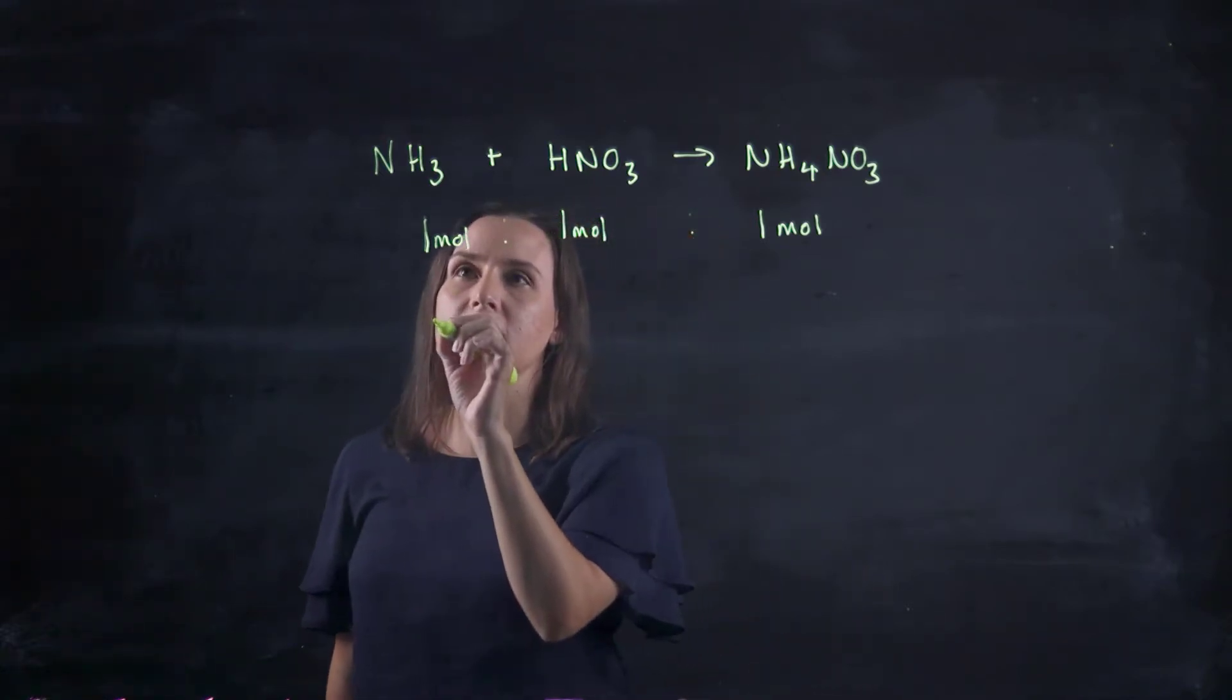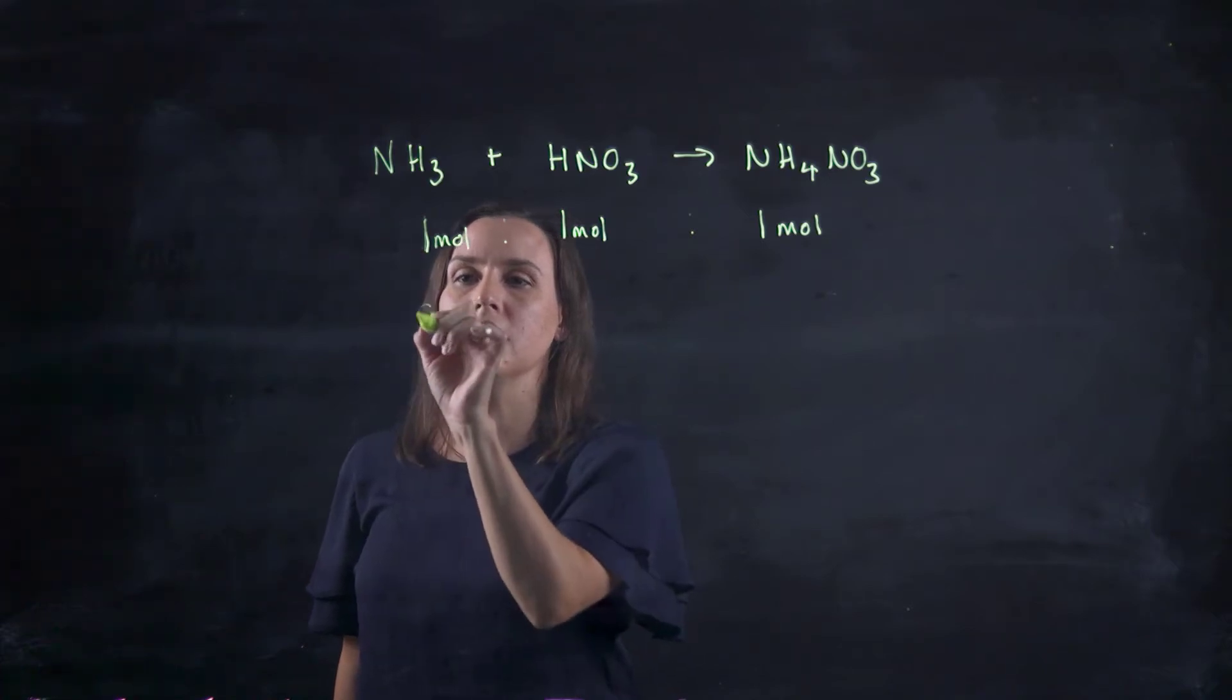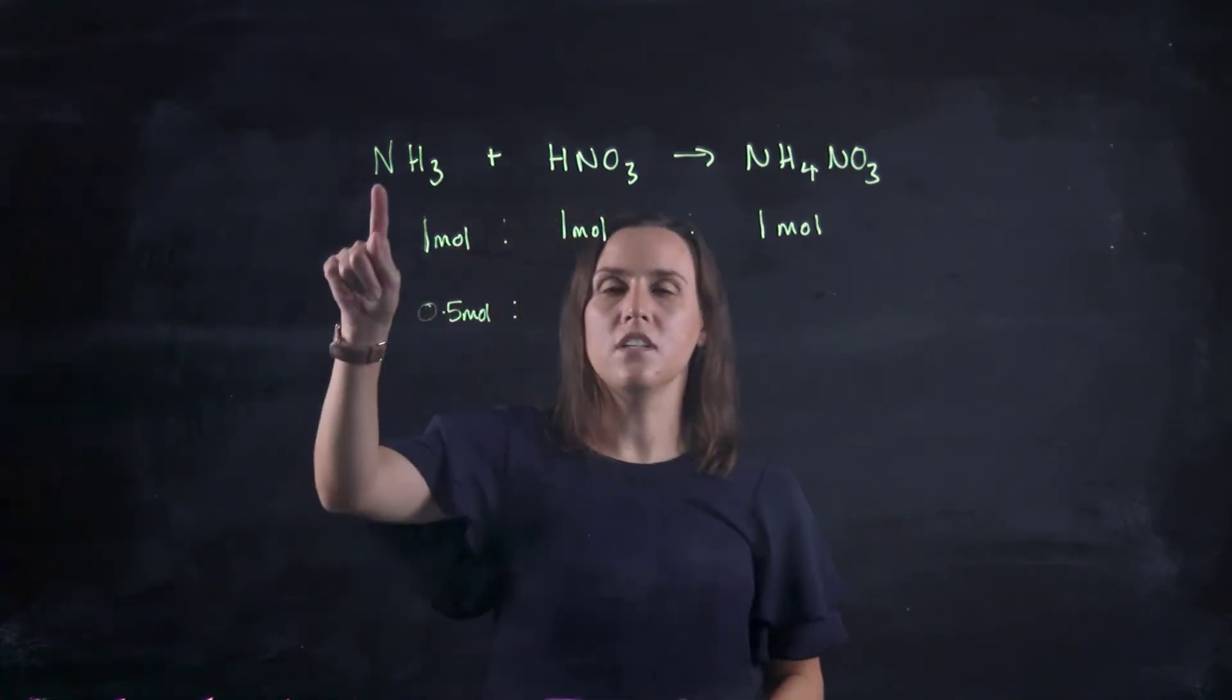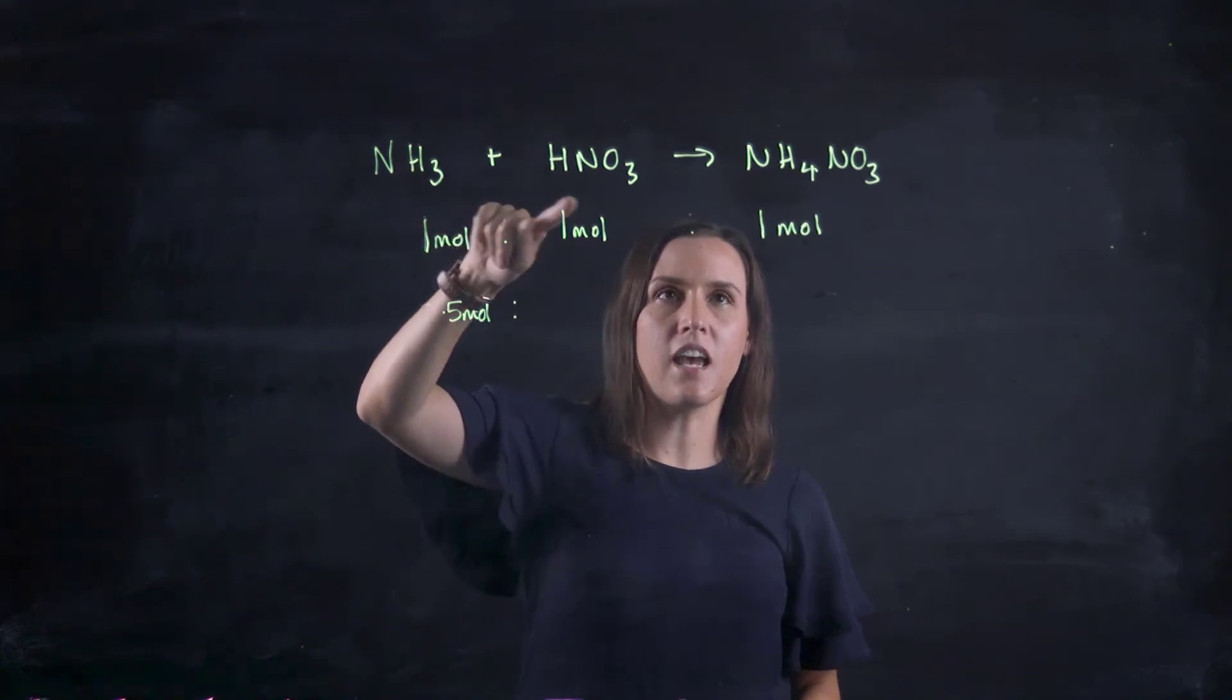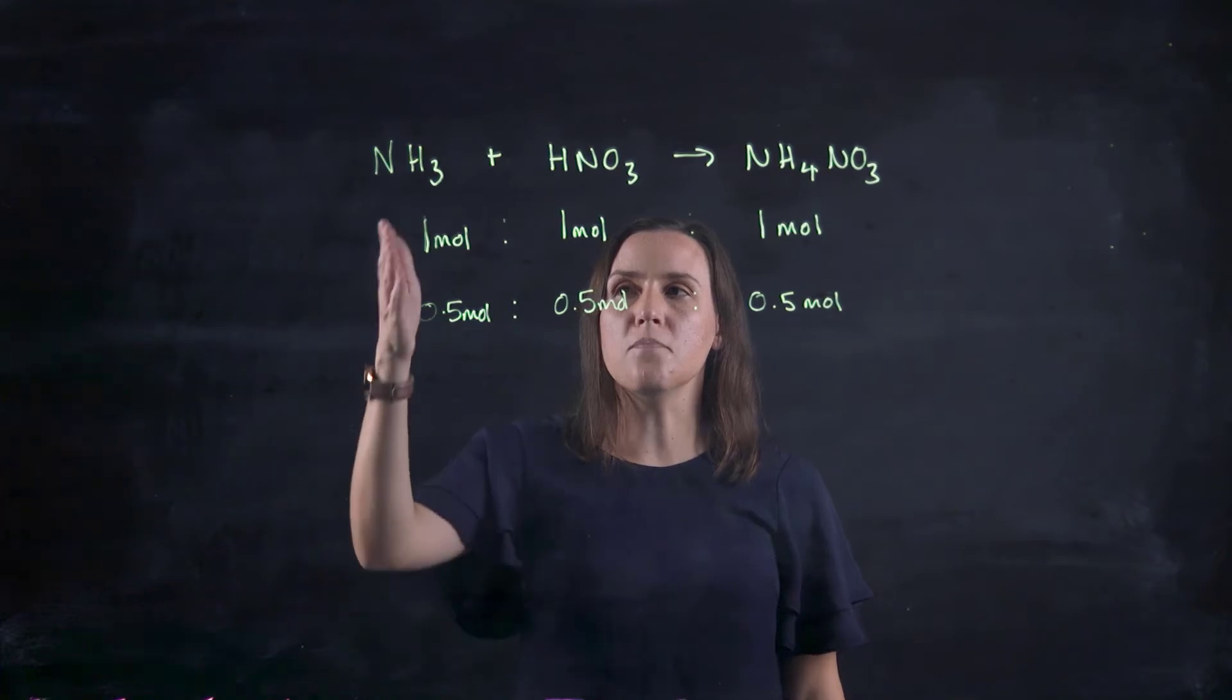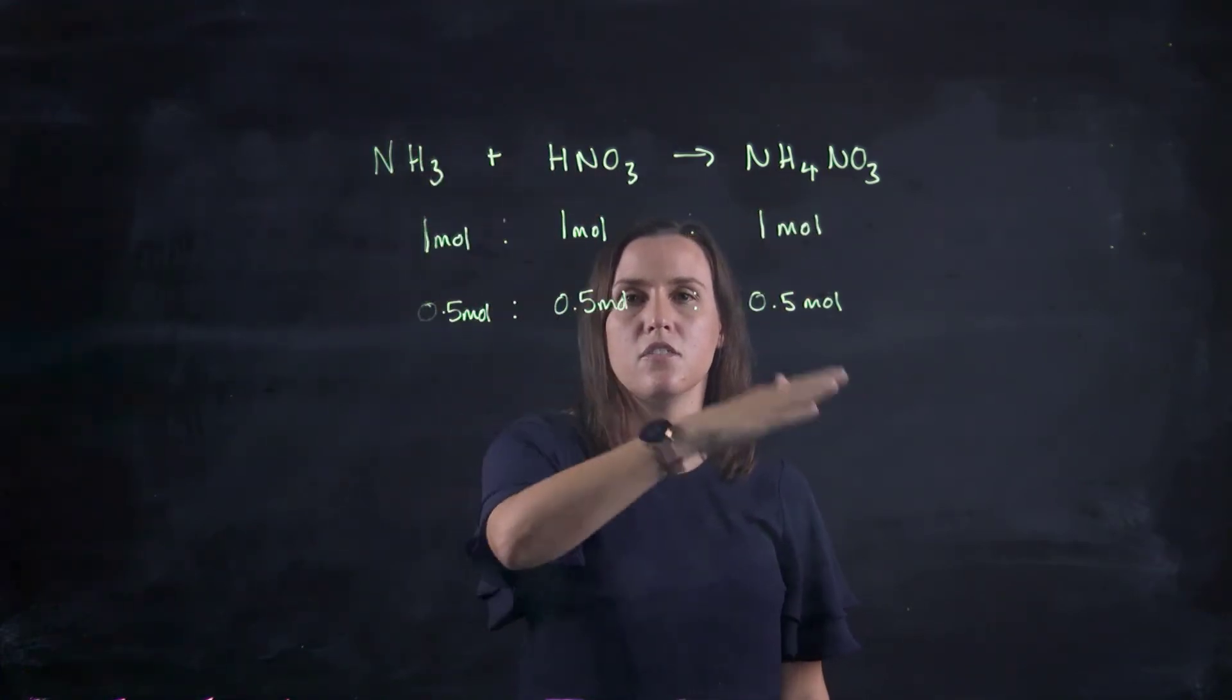If I had only 0.5 moles of this, I would need 0.5 moles of this, and I would produce 0.5 moles of this. So the amount in this being one to one to one would be the same from reactants to your products.